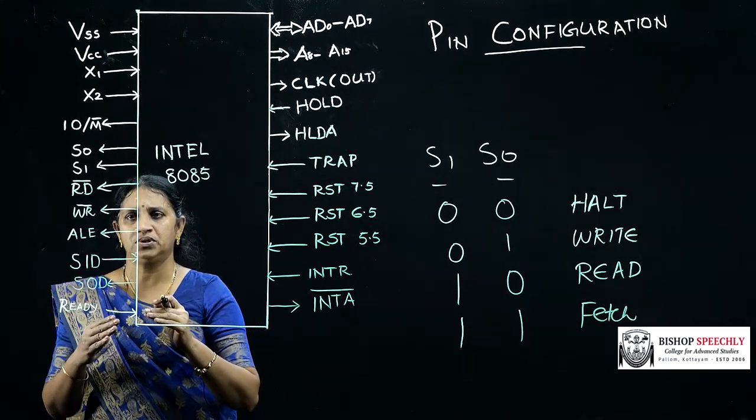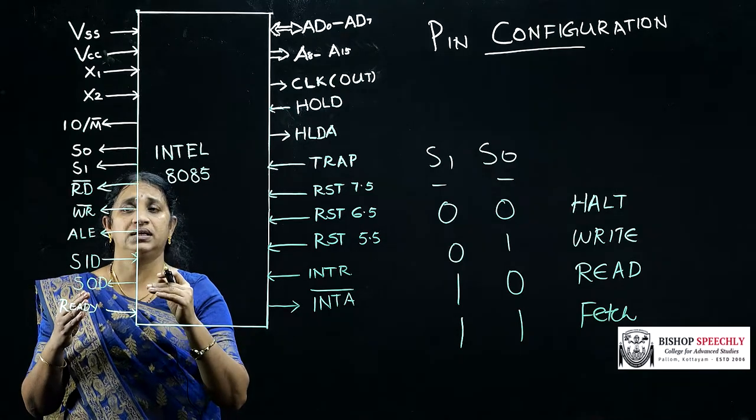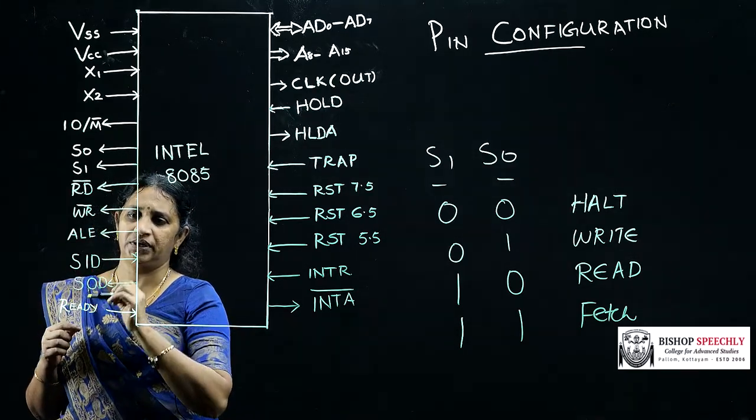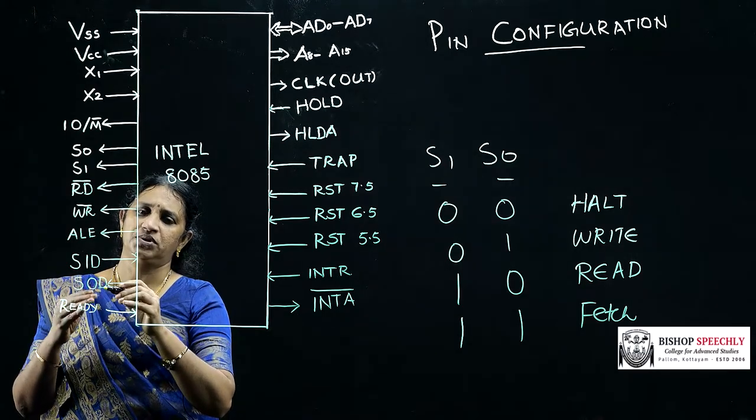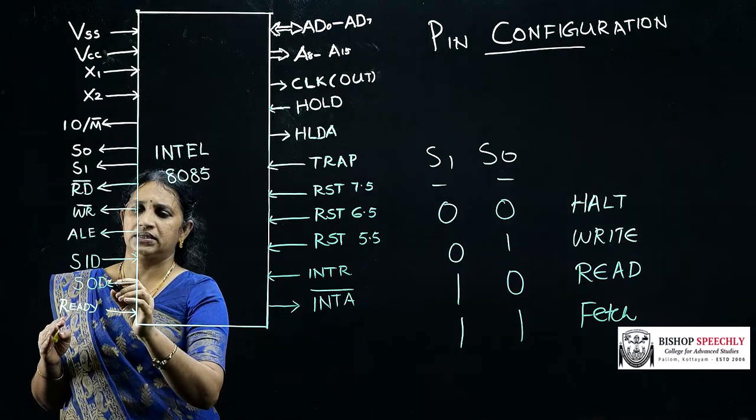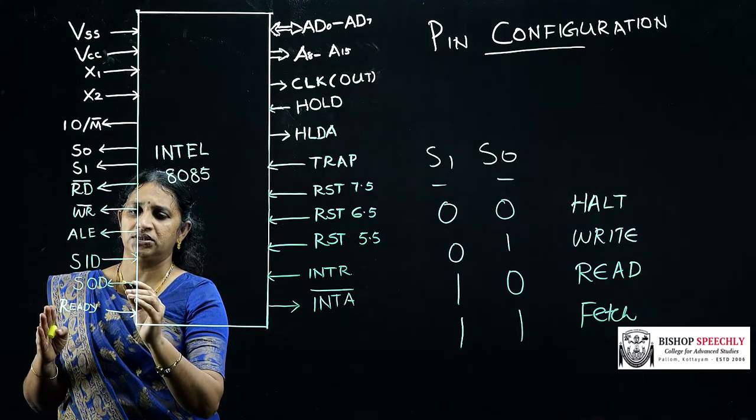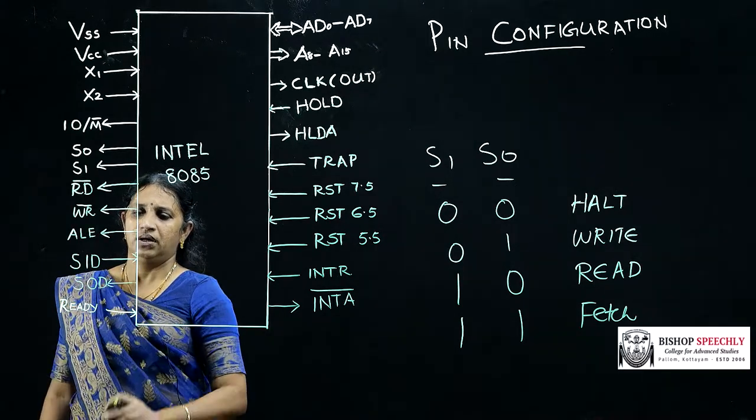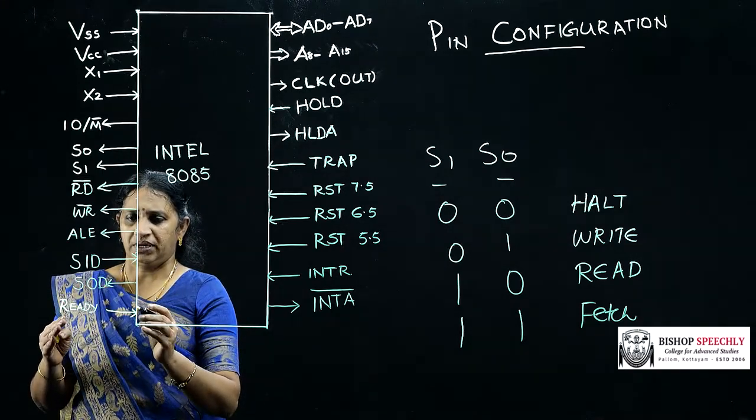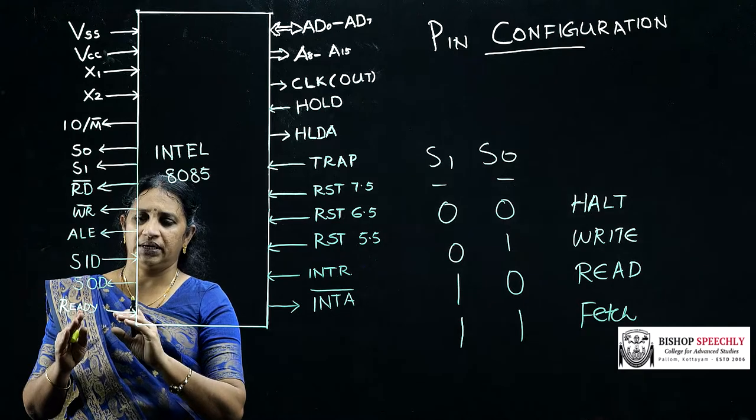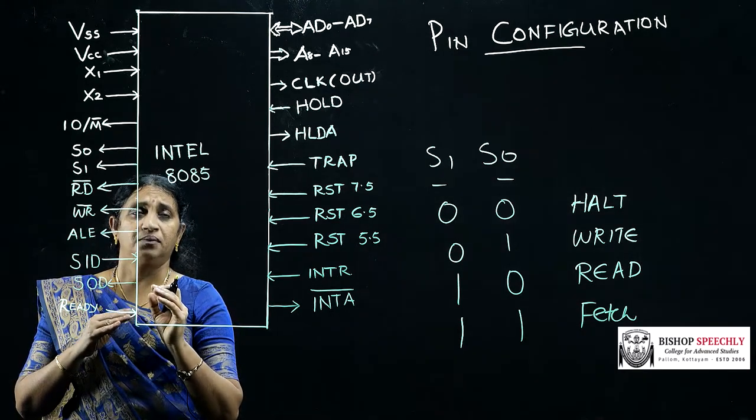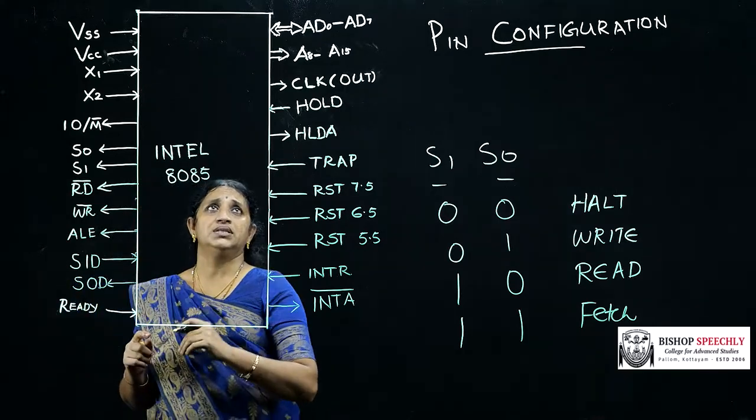It is useful for storing the address on the data bus. The next pin is serial input data. It is for accepting inputs to the microprocessor. The next pin is serial output data. It is used for outputting. The next pin is READY. It is used by other peripheral devices for indicating they are ready for accepting signal from the microprocessor.